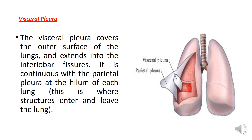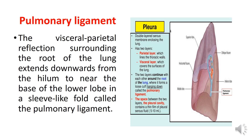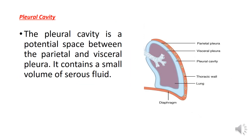The visceral pleura covers the outer surface of the lung and is adherent to it, and it extends into the interlobar fissures. It is continuous with the parietal pleura at the hilum of the lung. The hilum is the site where structures enter or leave the lung. The visceral pleura is absent at two sites: at the hilum of the lung and between the margins of the pulmonary ligament. The pulmonary ligament is a double layer fold of pleura which descends downward from the hilum. At the margins of the hilum and pulmonary ligament, the visceral pleura is reflected to become continuous with the mediastinal part of the parietal pleura.